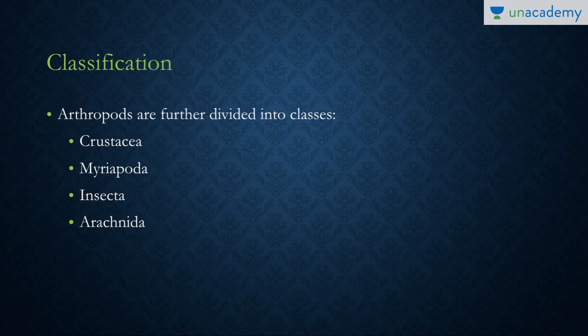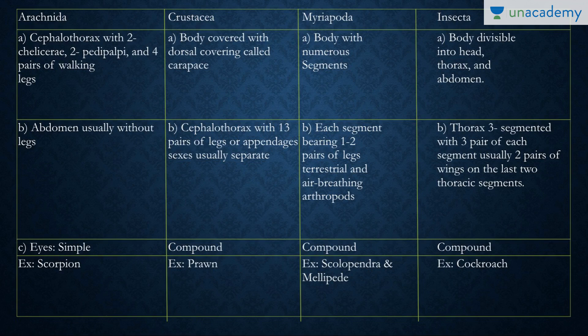Moving into the classification: arthropods are divided into many classes, of which four are important — Crustacea, Myriapoda, Insecta, and Arachnida. A table is provided to make this easy; you can pause the lesson to go through it, and I'll read it out for you.